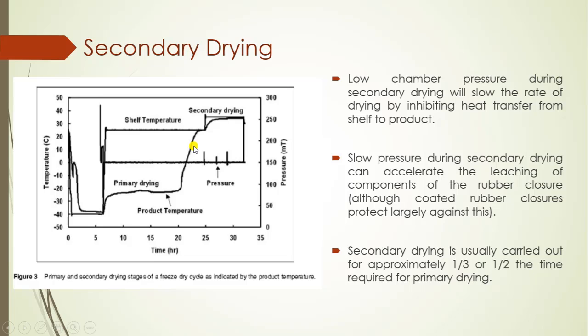The rate of increase in product temperature is quite higher during secondary drying compared to primary drying. Low chamber pressure during secondary drying will slow down the rate of drying by inhibiting heat transfer from the shelf to the product, and low pressure during secondary drying can also accelerate the leaching of components from rubber closures.